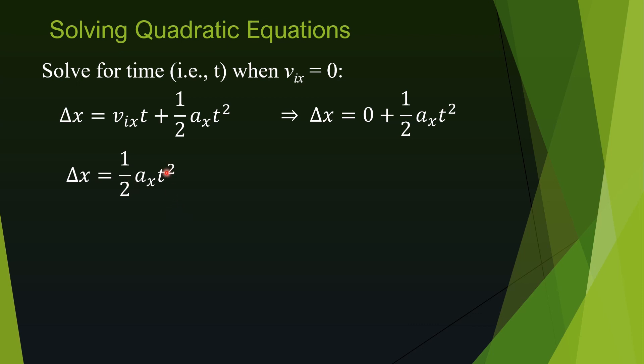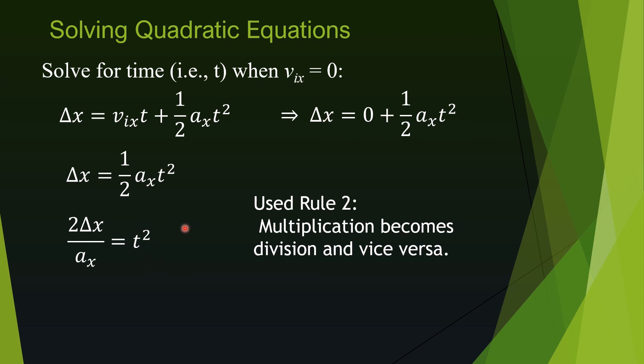Remember, we are trying to solve for t squared. And t squared is multiplied by aₓ. We can move aₓ to this side, so it's going to divide. So that gives us t squared.